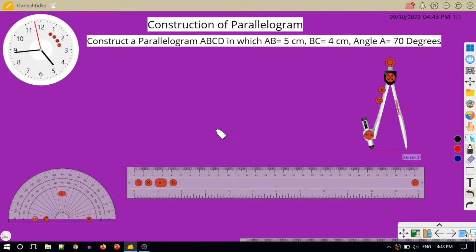So here is a question. Construct a parallelogram ABCD in which AB is given to be 5cm, BC is equal to 4cm, and angle A is given to be 70 degrees. So this angle A is the included angle.